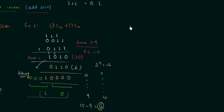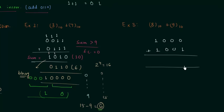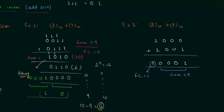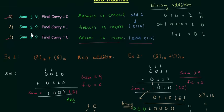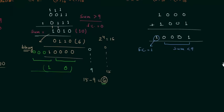In example 3 we have to perform the addition 8 plus 9. 8 is represented by 1000 and 9 is represented by 1001. We will perform simple binary addition. 0 plus 1 is 1; 0 plus 0 with carry gives 0 with carry equal to 1. You can see the final carry is equal to 1, and the sum is less than 9. So this is case number 2, when we have sum less than or equal to 9 and final carry equal to 1. In case 2 the answer is also incorrect and we have to add 6.